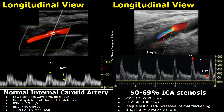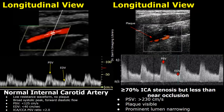Here, the PSV is between 250 and 300 cm per second and the EDV is between 50 to 100 cm per second. A stenosis of more than 70% but less than near occlusion is considered if the PSV is greater than 230 cm per second, and a large visible plaque is seen along with prominent lumen narrowing. Here, we can see a very small amount of flow right next to a large plaque, indicating significant lumen narrowing.